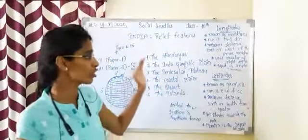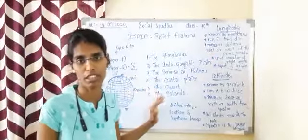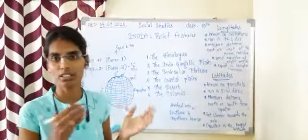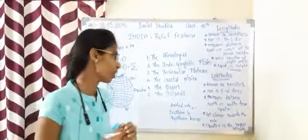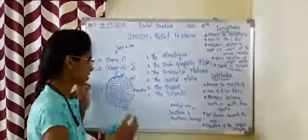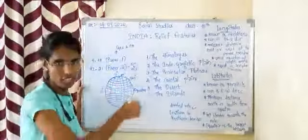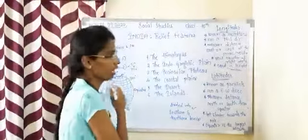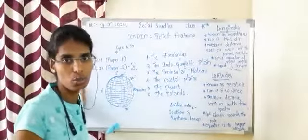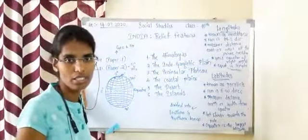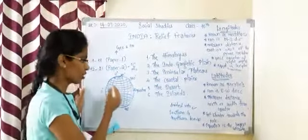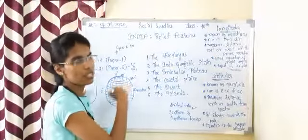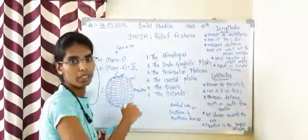Before learning about these 6 major relief features, we shall go into the basics. On the globe, we can find latitudes and longitudes. Latitudes are the horizontal lines and longitudes are the vertical lines.